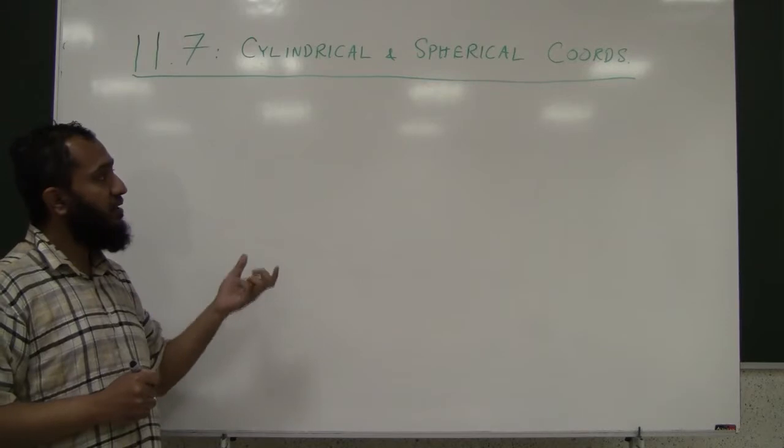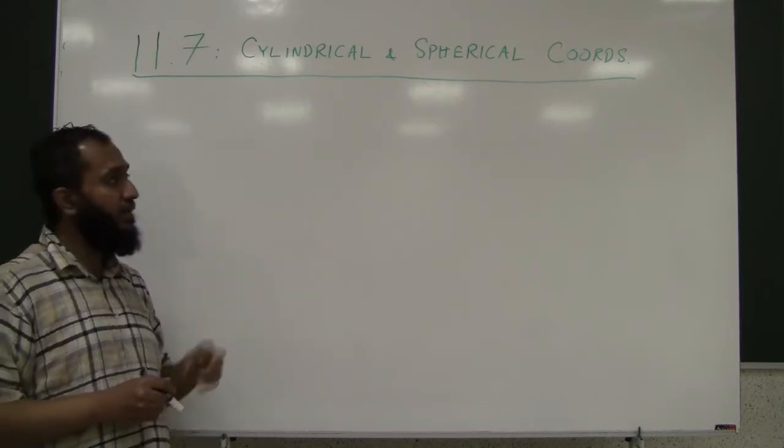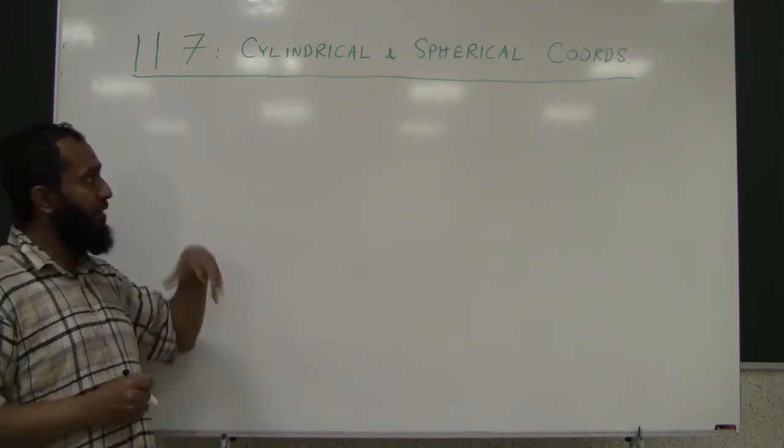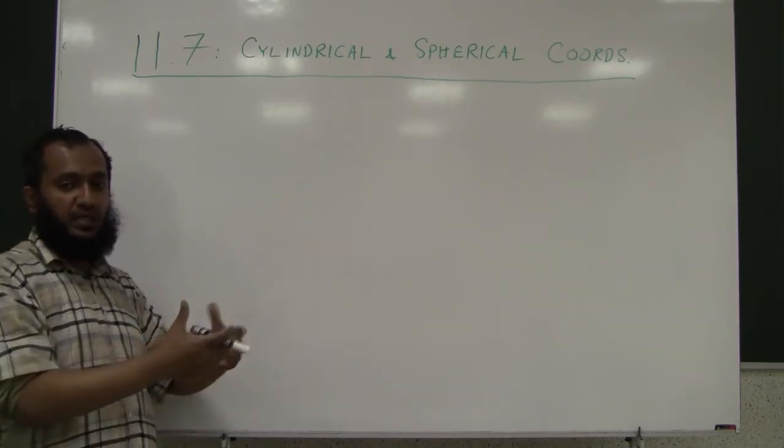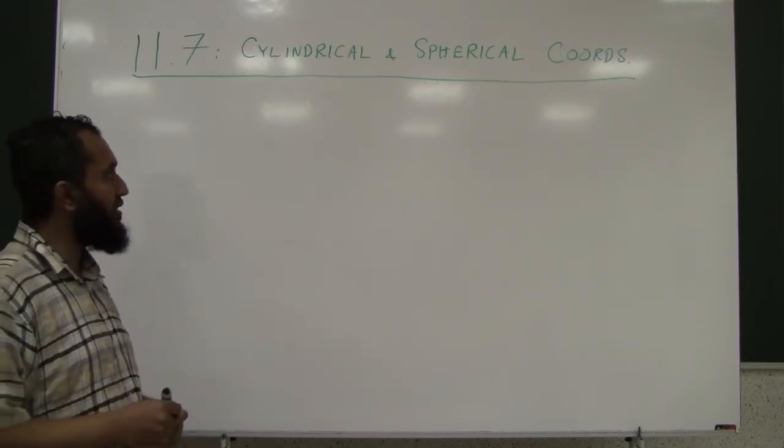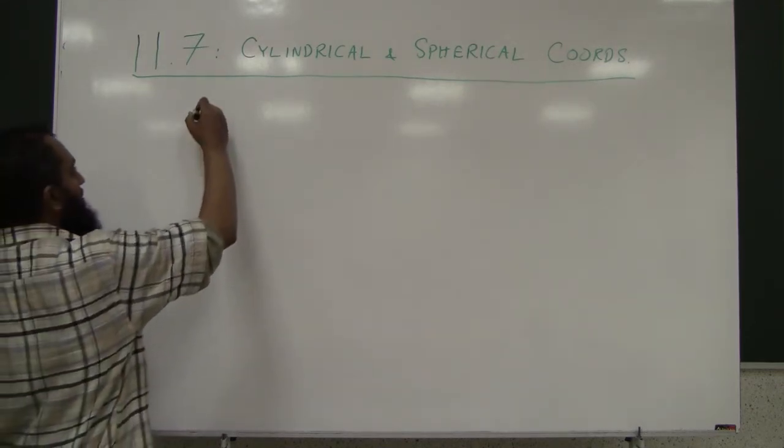Similarly, in 3D, we have other than the rectangular coordinate systems, we have the cylindrical and spherical two coordinate systems. And just like we saw in 2D, sometimes one coordinate system is better for certain kinds of objects and shapes than another one. It makes certain descriptions of things easier. Let's start with the cylindrical coordinate system.